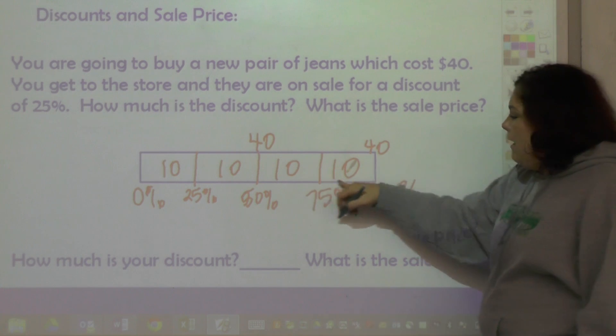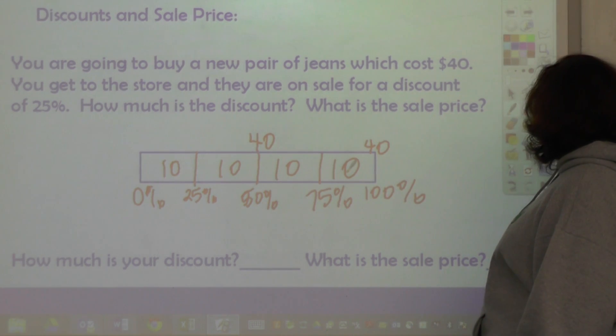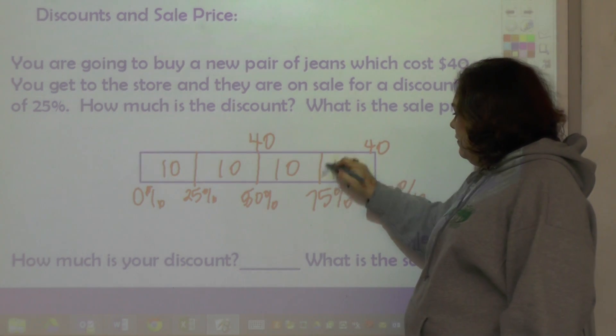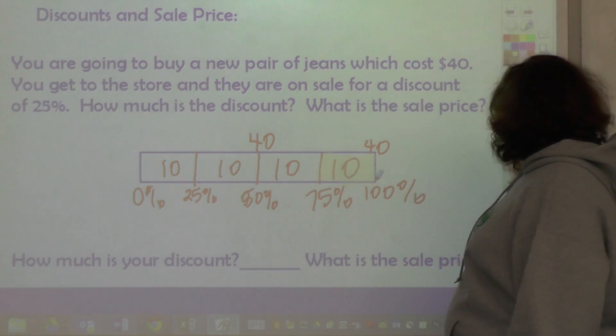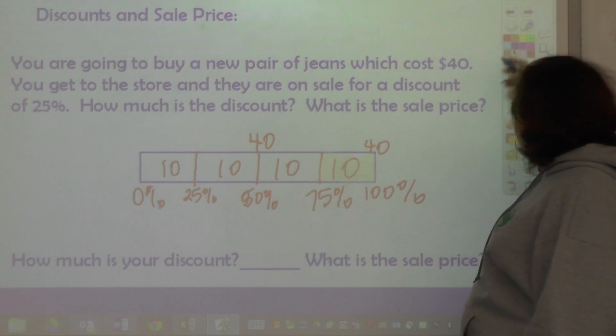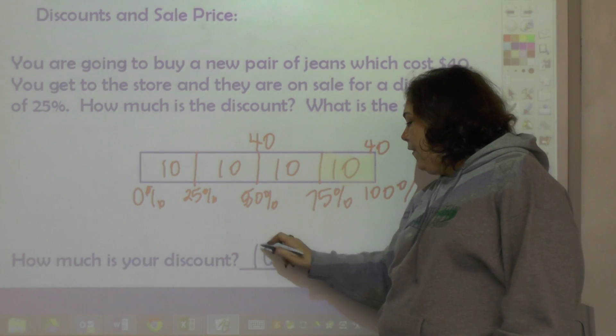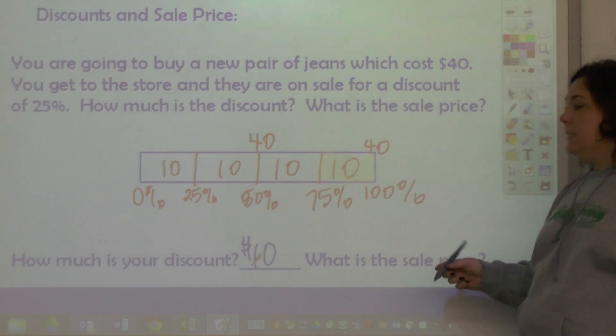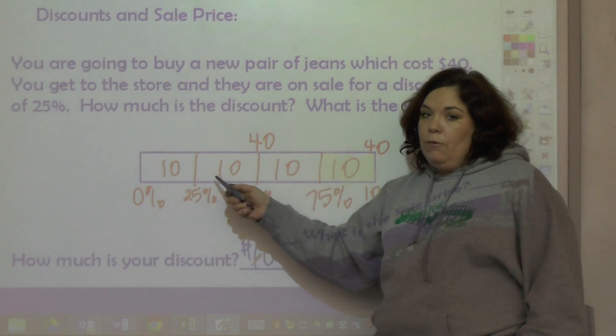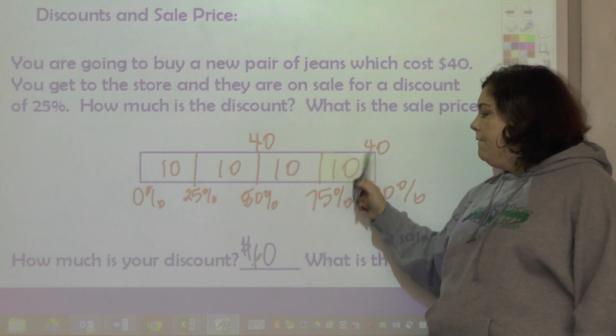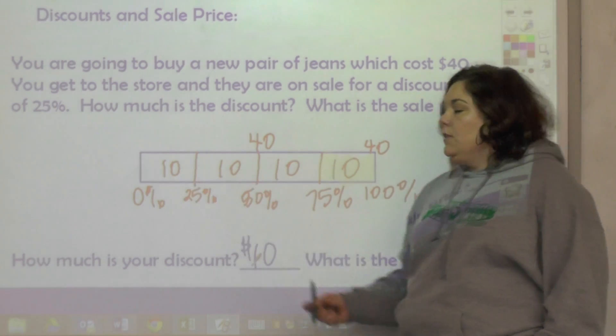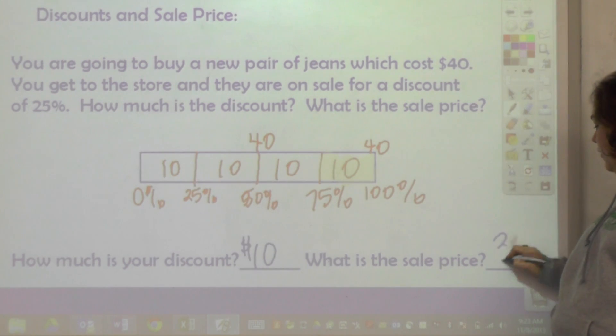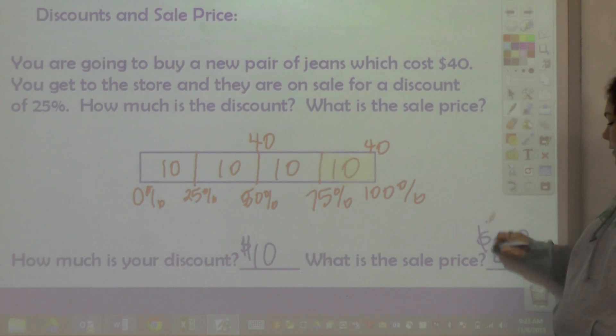So 25% of that would be 10 dollars. So ten dollars is my discount - I save ten dollars. So what is the sale price? This is what I paid - what's left. This is what I took off, and this is what I paid. So my total is 30 dollars. So I paid 30 dollars for my jeans. That's what's left after the discount.